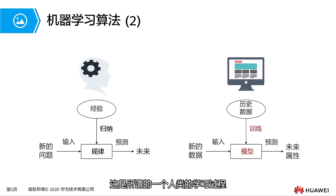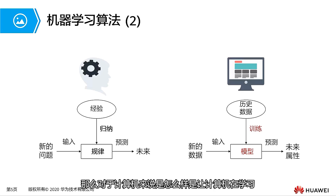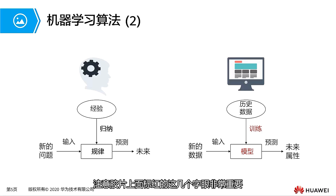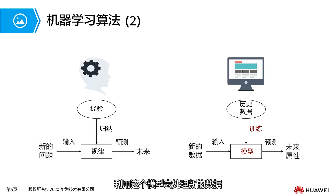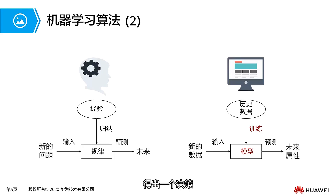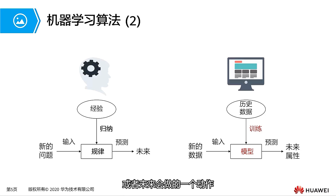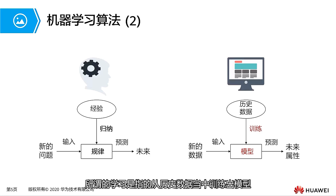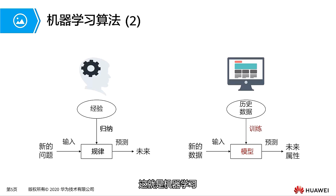So, how does a computer learn? It uses historical data to train and obtain a model — these are very important concepts. After obtaining a model through training with historical data, this model is used to process new data. The new data serves as input for the model to make a prediction or decision and produce an output. For machines or computers, the so-called learning refers to training a model from historical data, which is machine learning.